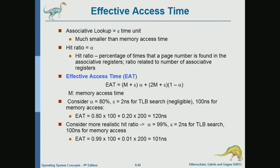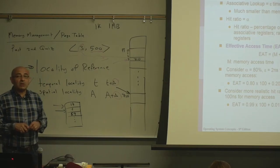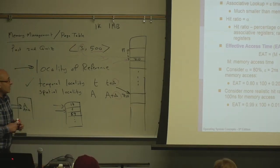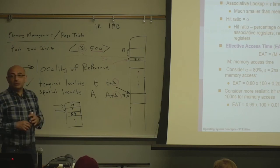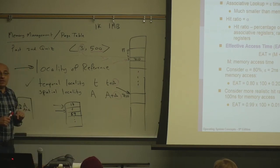A more realistic hit ratio is 99%. In that case, effective access time is 0.99×100 + 0.01×200 = 101ns — almost equal to one memory access. This near-perfect hit rate is due to locality of reference. Because programs tend to repeatedly access the same or adjacent memory locations, they will keep hitting the same TLB entries.